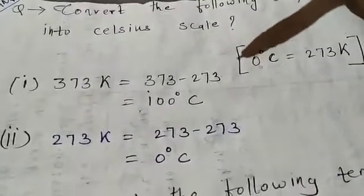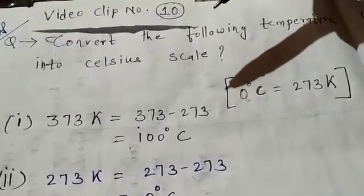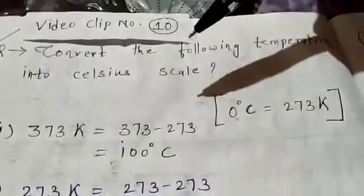So, here we completed the properties of solid, liquid and gas. 9 properties were discussed. Now, our next topic is to convert the following temperature into Celsius scale.